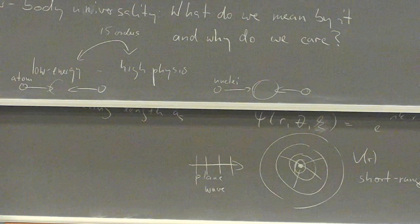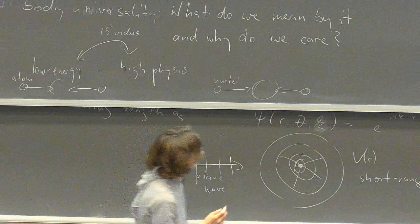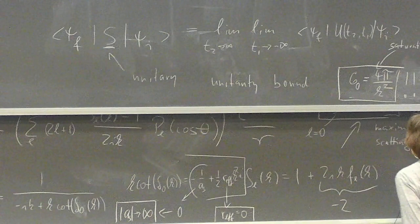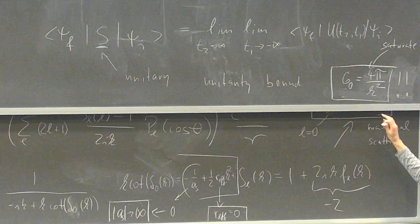So those are the two points: the scattering length goes away in the sense it's infinitely large and doesn't set a scale, so we don't have any microscopic details left in our theory.